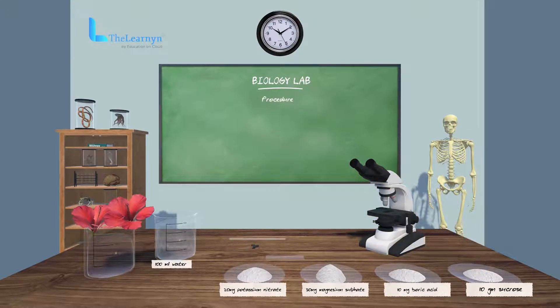Prepare the pollen germination medium by dissolving 10 grams sucrose, 10 milligrams boric acid.